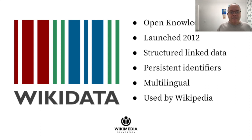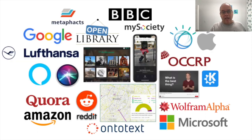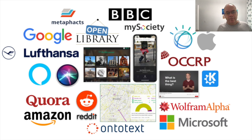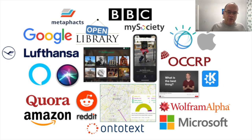Wikidata is entirely multilingual, as we will see in a moment, and it is used extensively by Wikipedia and many other projects, companies, and developers such as Google, Apple, Microsoft, Lufthansa, the BBC and many more. Also and in particular by research teams all around the world. Google Scholar lists more than 26,000 research papers on top of Wikidata.